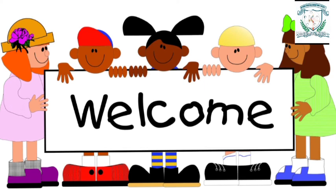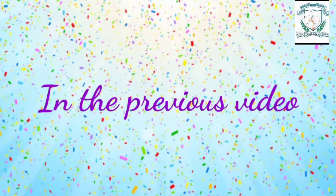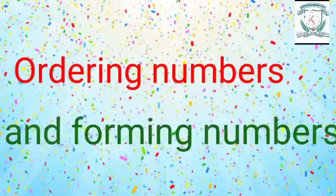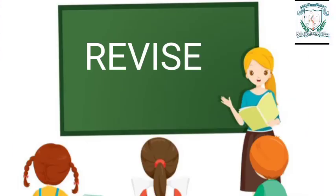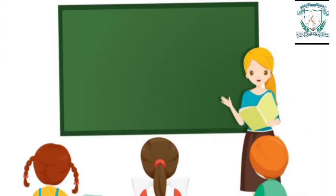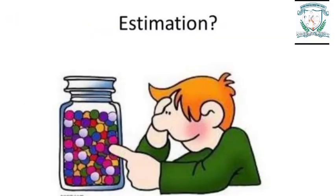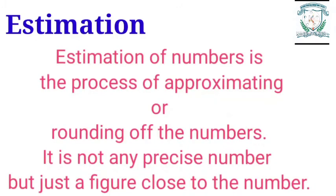We the maths teachers welcome you back to the e-learning program. In the previous video we revised about ordering numbers and forming numbers. In this video let us revise about estimation and Roman numerals. Estimation is the process of approximating or rounding off numbers — it is not a precise number but just a figure close to the number.